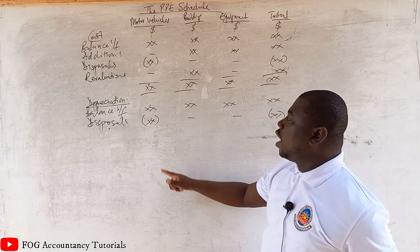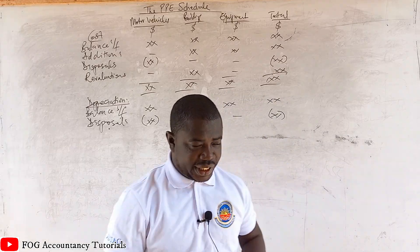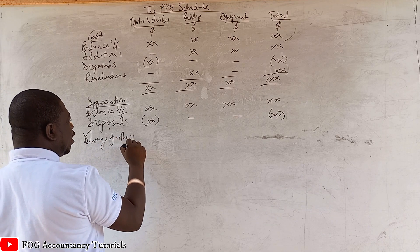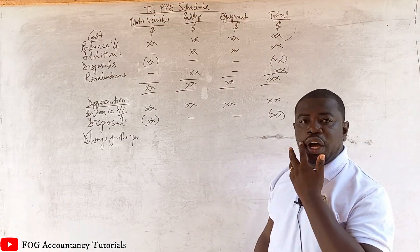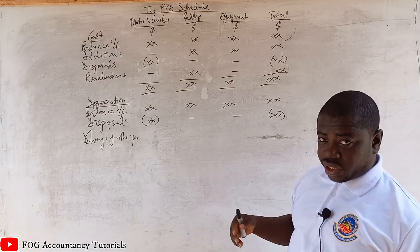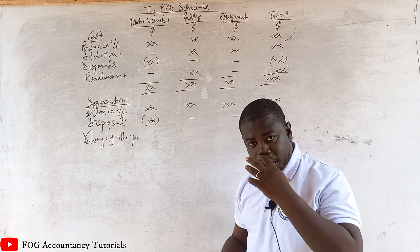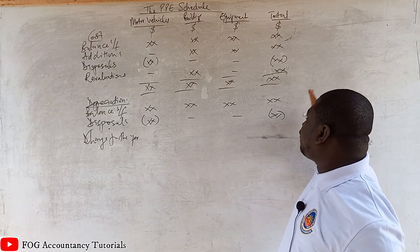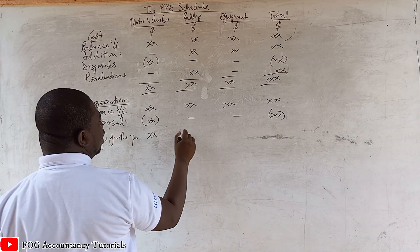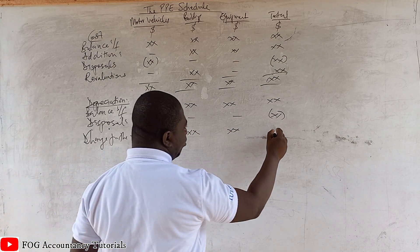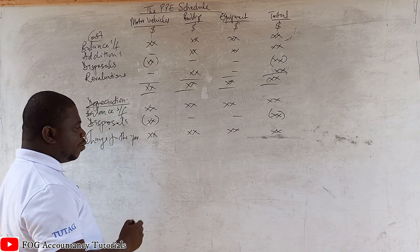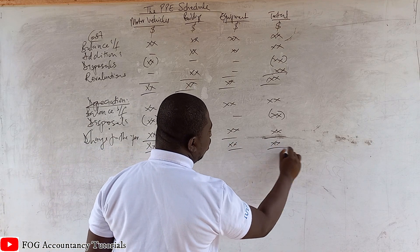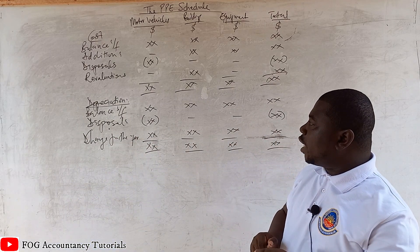After disposals, there is only one thing left, which you may work out externally and bring in: the depreciation charge for the year. The depreciation charge for the year is what you apply the rates on. If straight-line method, it's applied on cost. If reducing balance, you take out the opening accumulated depreciation from cost. You bring the depreciation charge here for each asset, and we are adding — the only thing we subtract is the disposals.